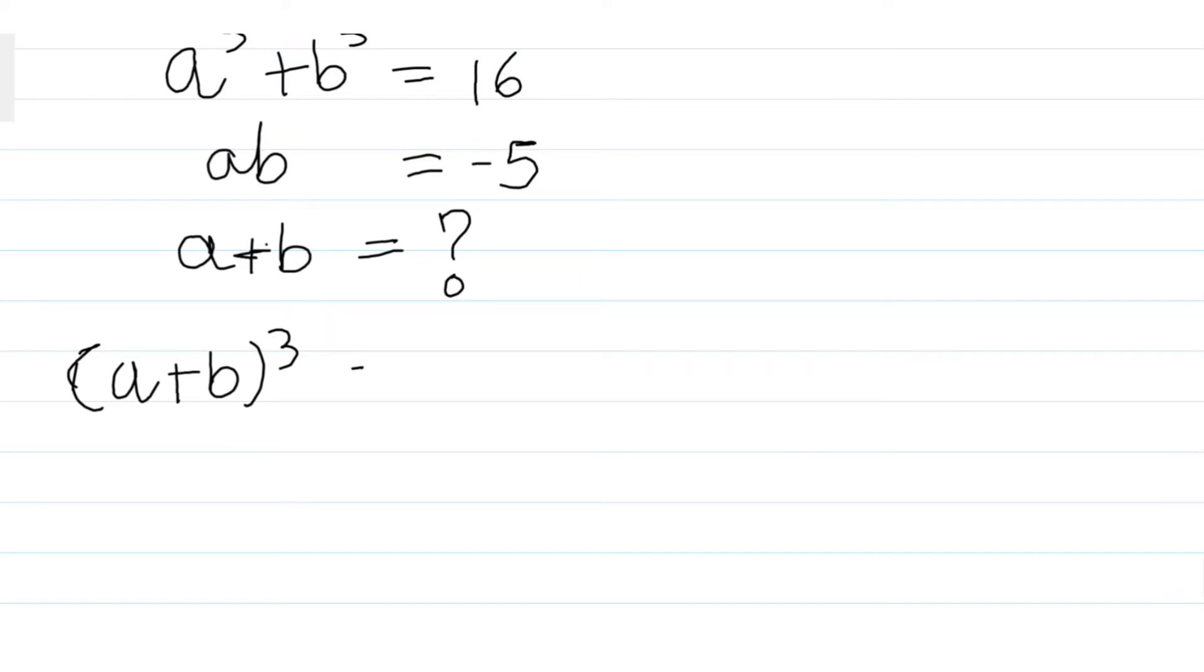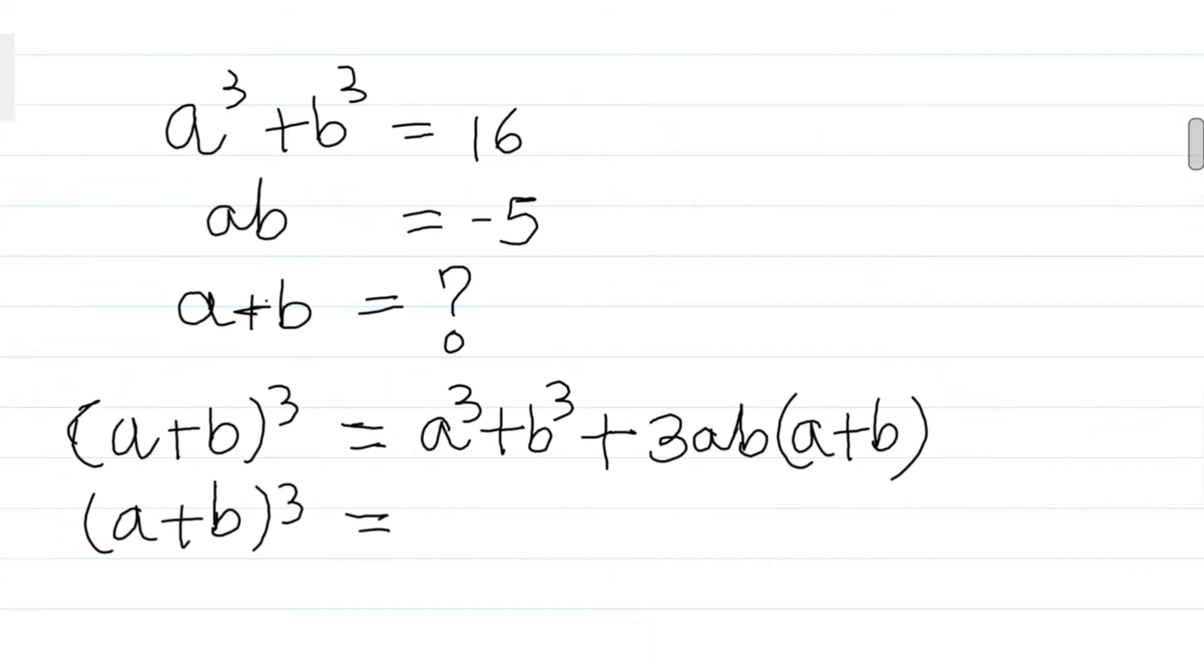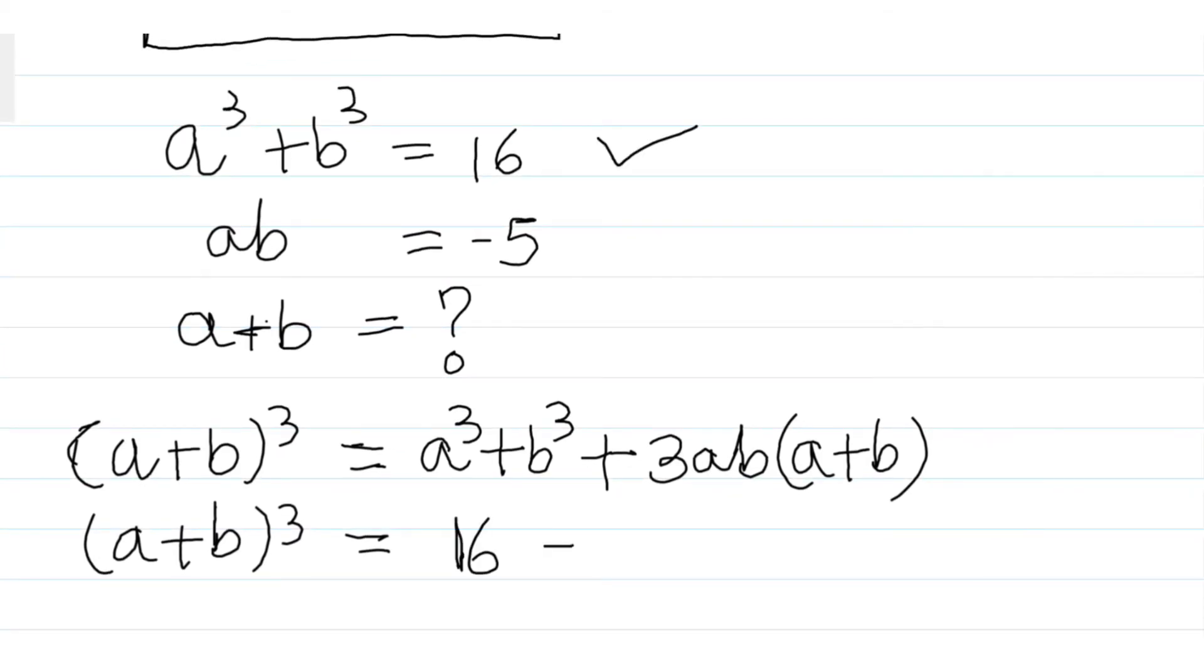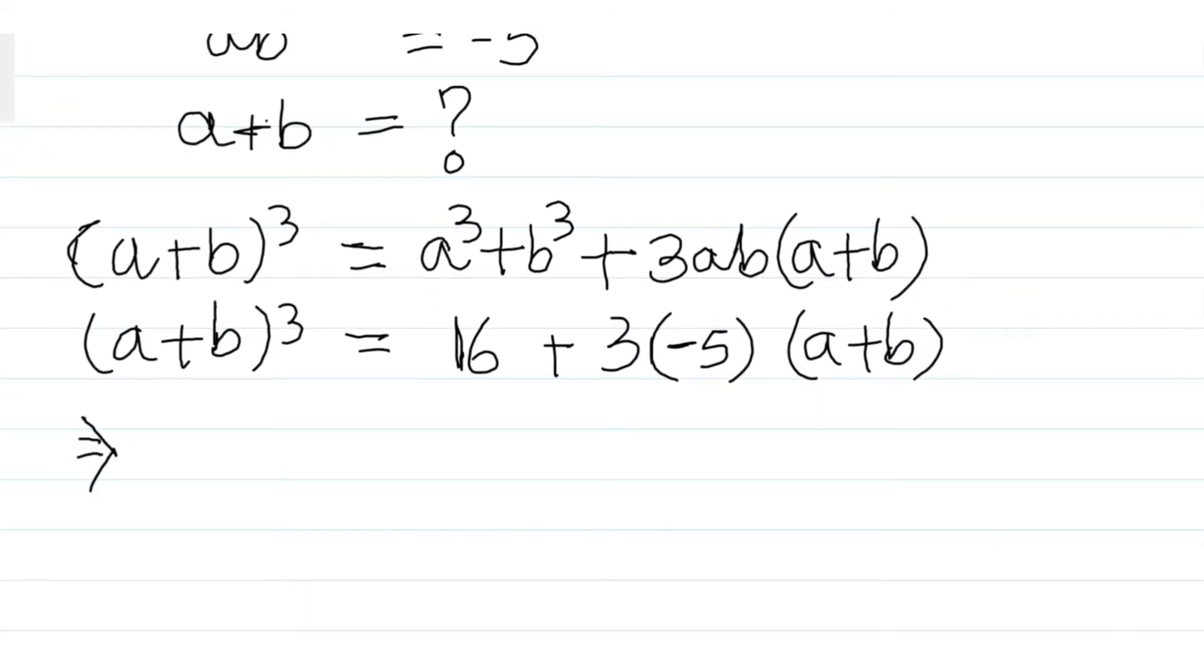which is a³ plus b³ plus 3ab(a+b). We don't know the (a+b) value, but we do know that a³ plus b³ is 16, so we'll put 16 here, plus 3ab, which is minus 5, times (a+b).